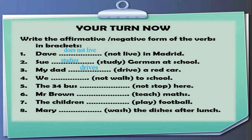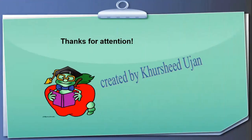Continuing the exercise: 'We ___ walk to school' — answer: 'don't walk to school.' 'The 34 bus ___ stop here' — answer: 'doesn't stop here.' 'Mr. Brown ___ maths' — answer: 'teaches maths.' 'The children ___ football' — answer: 'play football.' 'Mary ___ the dishes after lunch' — answer: 'washes the dishes.' If you have solved these, please write your answers in the comment box. This is all about present simple tense. Keep watching — our next lecture is on present continuous tense.